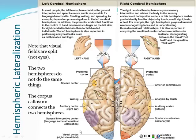The left side also has Wernicke's area, responsible not just for language understanding but also mathematics, logic, and calculation. The right side instead specializes in spatial relationships — imagining and mentally rotating a 3D cube, for example, involves the right side of the brain.